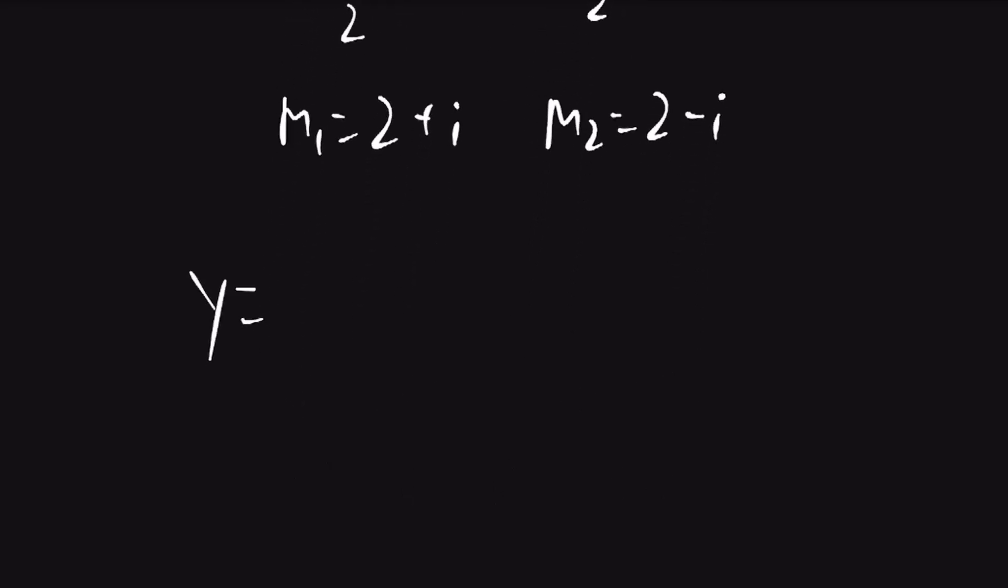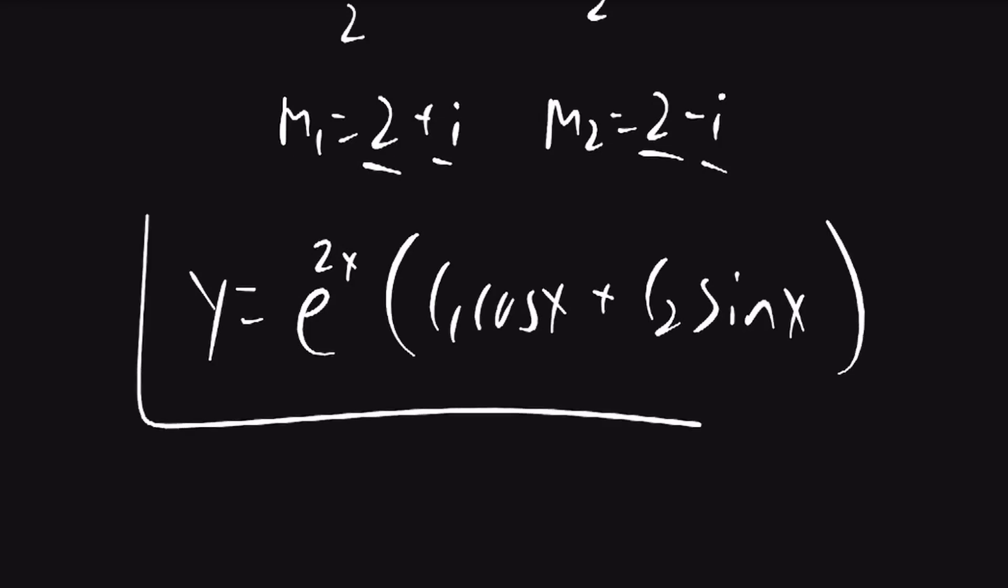So y will be equal to e to the 2x times c1 times cosine of x plus c2 times sine x. And that is our final answer. If this video helped you, consider subscribing.